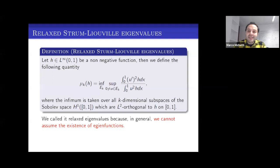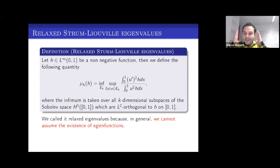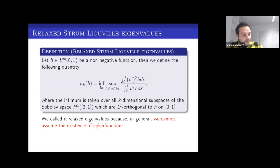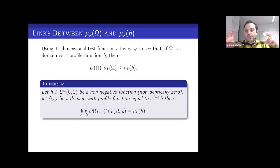I speak about a relaxed eigenvalue because in general, if I don't assume anything about h, this infimum cannot be achieved — it will not be a minimum. If this infimum is a minimum, so I have an optimal k-dimensional subspace, then this is an eigenvalue in the classical sense: I can associate an eigenfunction to it, and the optimal k-dimensional subspace is spanned by the first k eigenfunctions. But in general, if the infimum is not a minimum, we cannot associate an eigenfunction to these relaxed Sturm–Liouville eigenvalues.